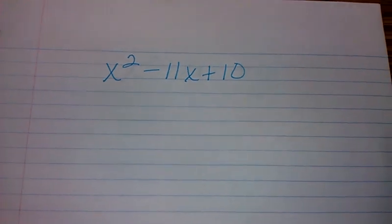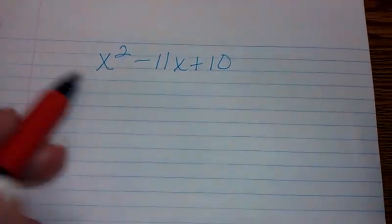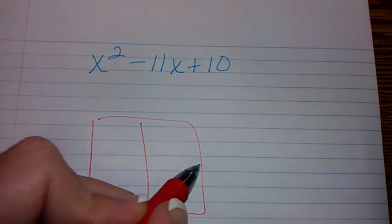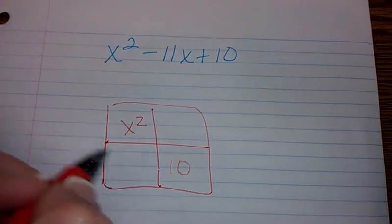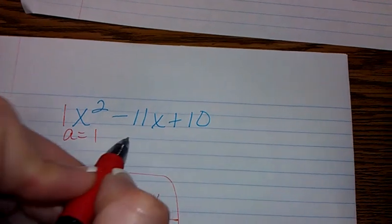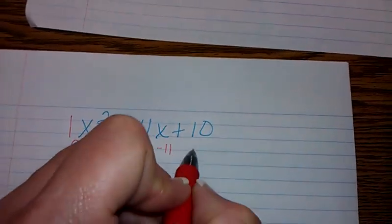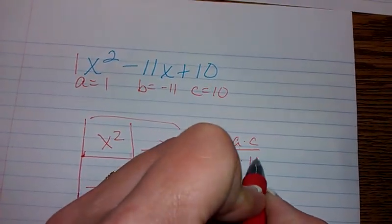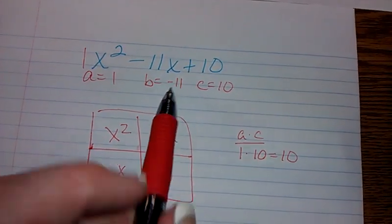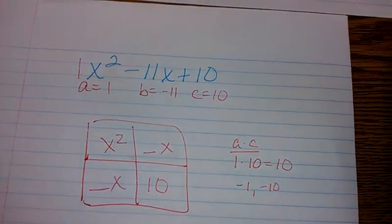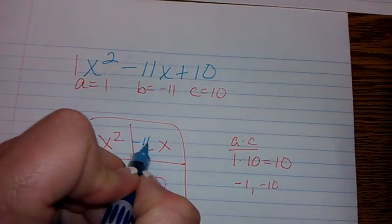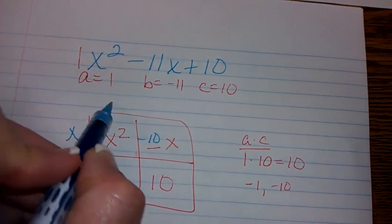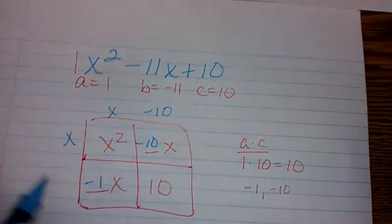Here's the next one — we have two more. Pause the video and come back and see how you did. Regular x², so I'll draw the box: x² and 10, something-x something-x. A is 1, b is negative 11, c is 10. A times c: 1 times 10 is 10. Factors of 10 that give negative 11: negative 1 and negative 10. I'll put those in the box. X squared splits as x and x — this is minus 10 and minus 1. Answer: (x − 10)(x − 1).